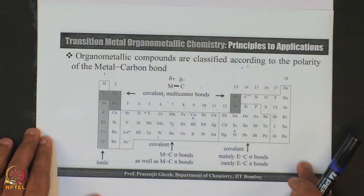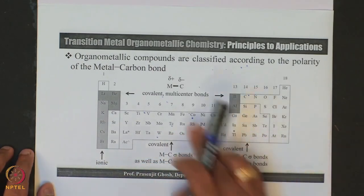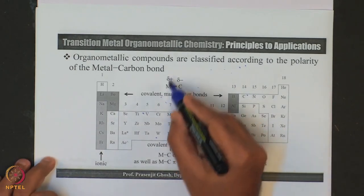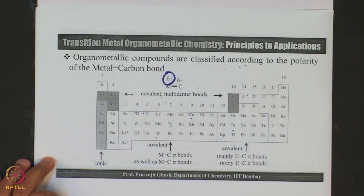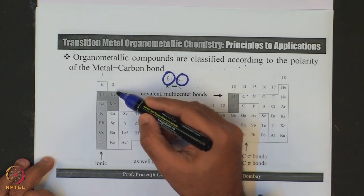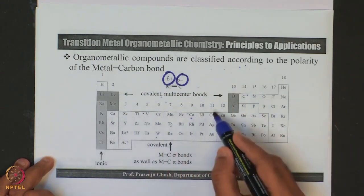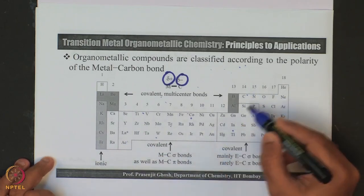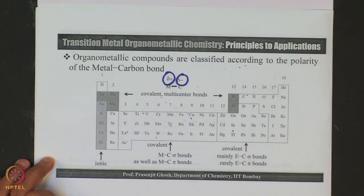Let us take a look at what kind of reactivity these compounds show depending on the kind of polarity they have. The best way to start off is to look at the periodic table. We see that various elements form polar bonds with carbon, where the metal is positively charged and carbon is negatively charged. In the periodic table, we have a first group which is alkali, then alkaline earth metals, then a series of transition metals, then metalloids, then non-metals, and finally the noble gases.